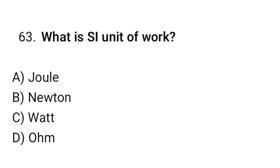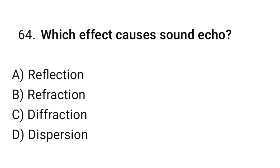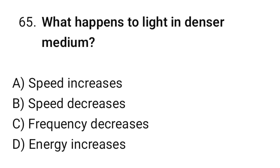Question number 63: What is the SI unit of work? The correct option is A — Joule. Question number 64: Which effect causes a sound echo? The correct option is A — Reflection. Question number 65: What happens to light in a denser medium? The correct option is B — Speed decreases.